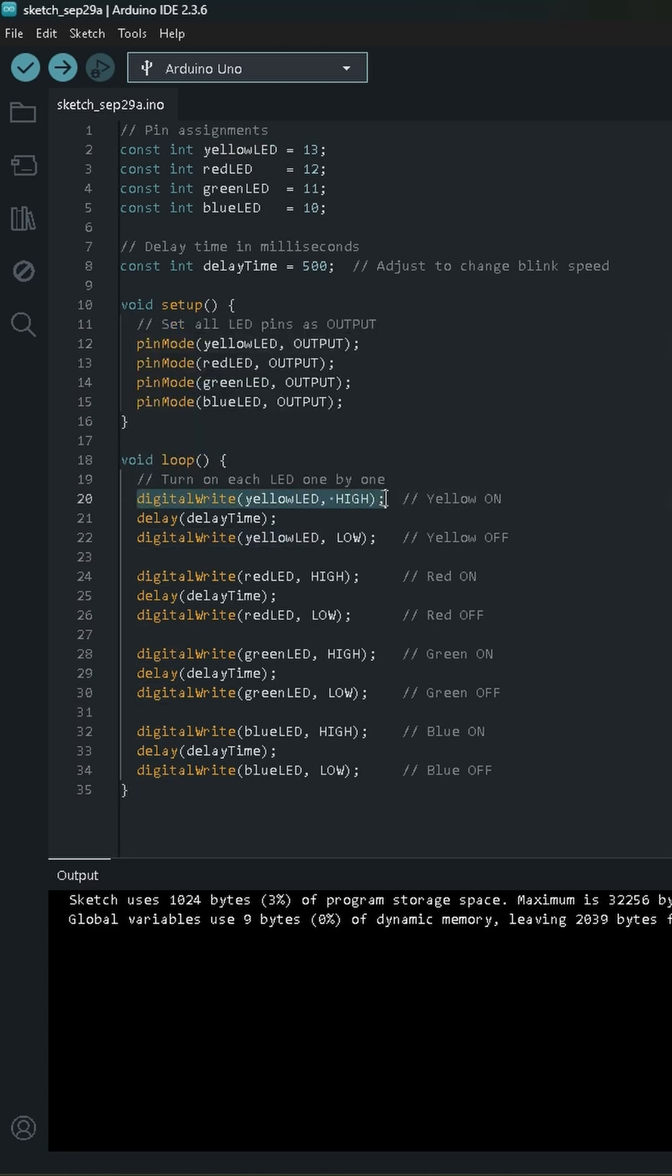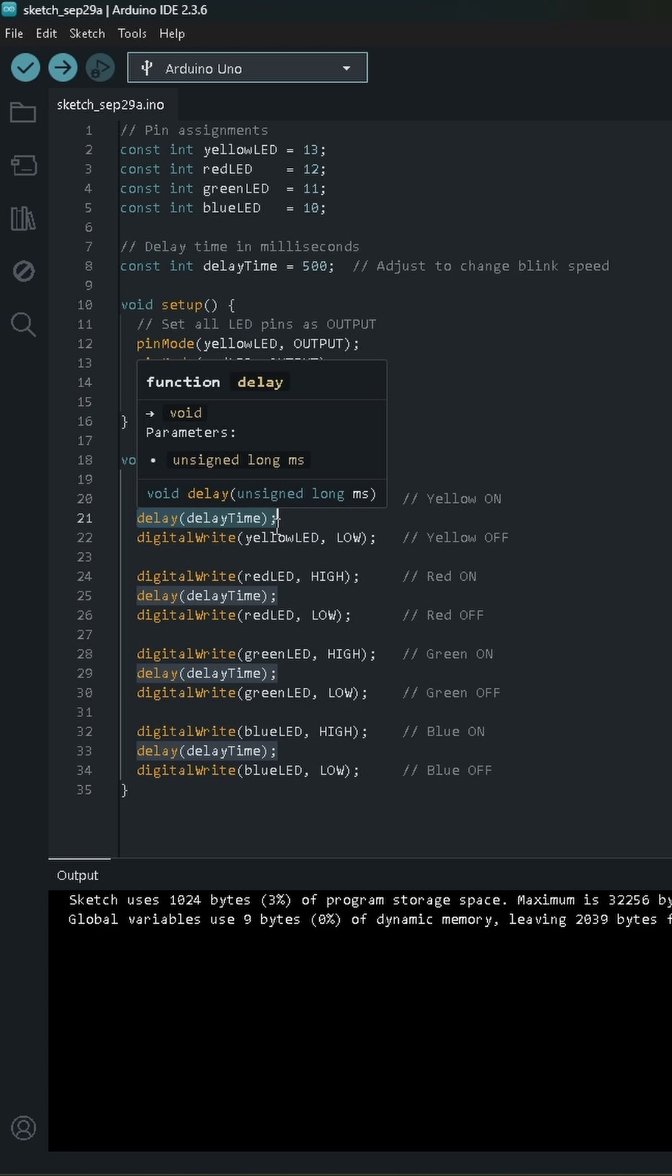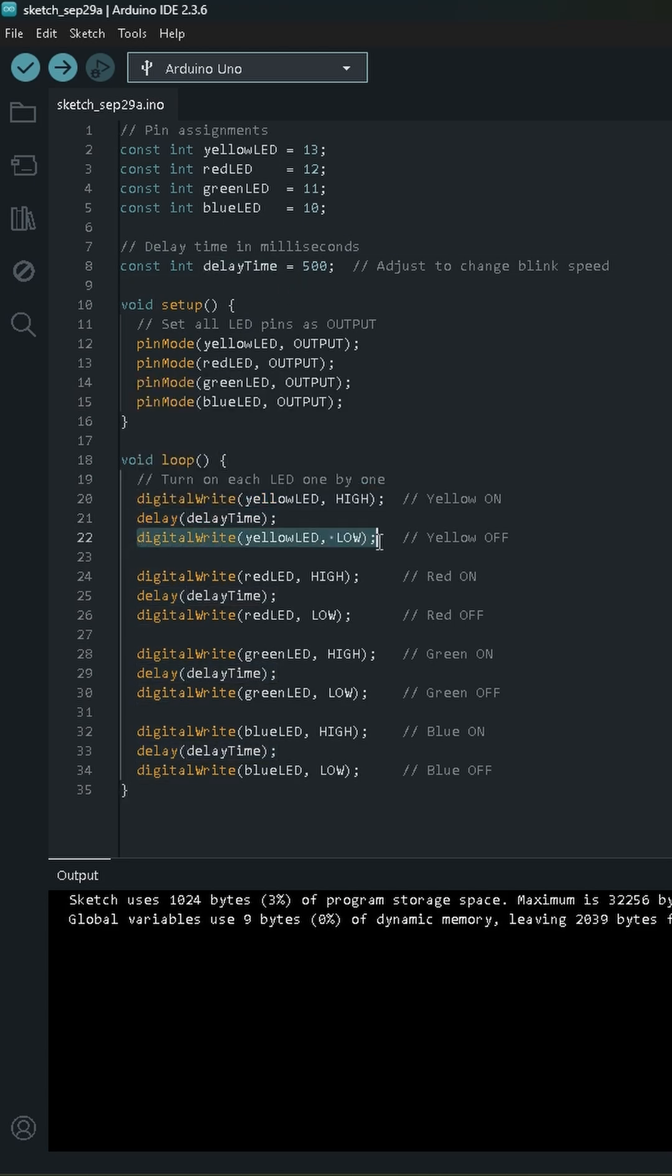We are first making that LED high, and then with this delay we are setting the LED to low again to make that off. So this is the ON state and this is the OFF state with the delay in between, and we are doing it for all the LEDs.